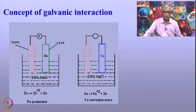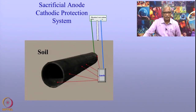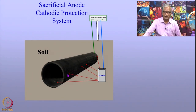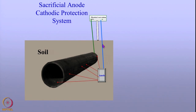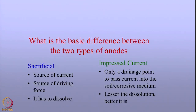This is another type of cathodic protection applied to prevent corrosion of metals. In the schematic diagram shown here, you can see a pipeline buried in the soil with an anode and a test station. The anode is connected to the positive terminal of the test station and the pipeline to the negative terminal. Current flows from the anode and the pipeline is protected from corrosion.